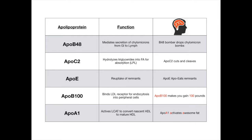So that's what APO-A1 does. Filling in this chart for completeness, we've now touched on the five high-yield apolipoproteins. APO-A1 activates LCAT to convert nascent HDL into mature HDL — mnemonic: activates awesome fat. APO-B100 makes you gain 100 pounds because it mediates endocytosis of LDL, the bad cholesterol, into peripheral cells.